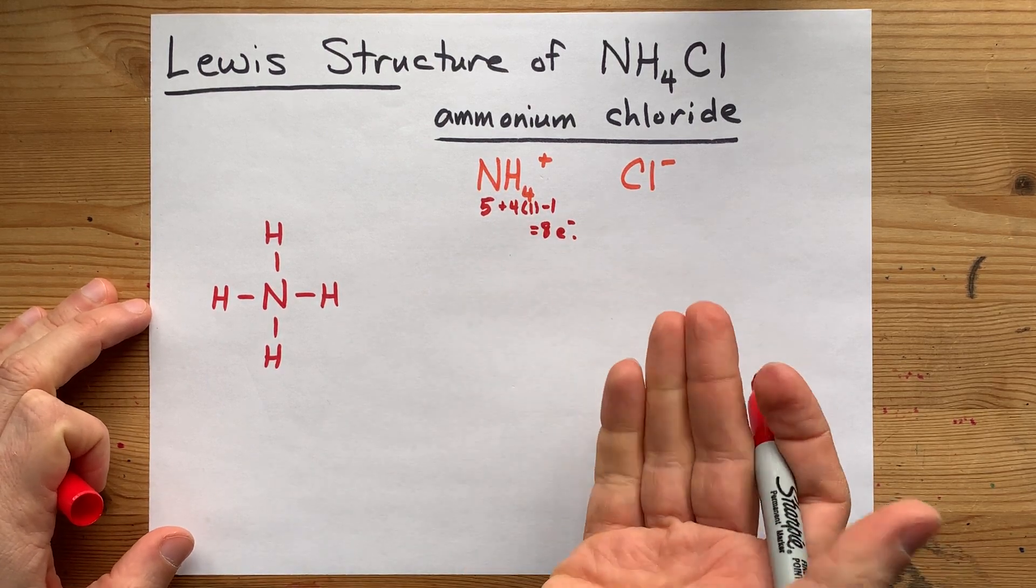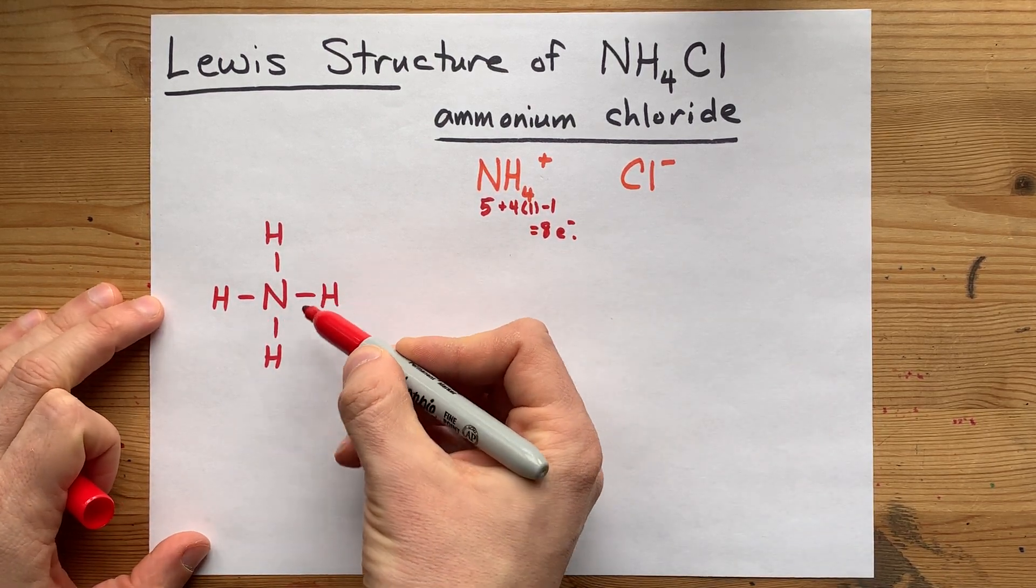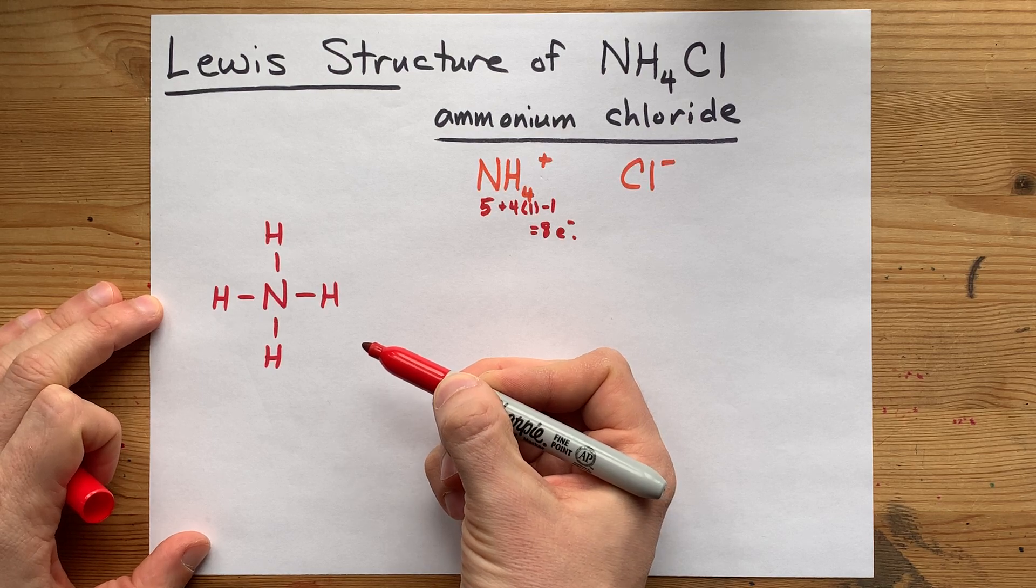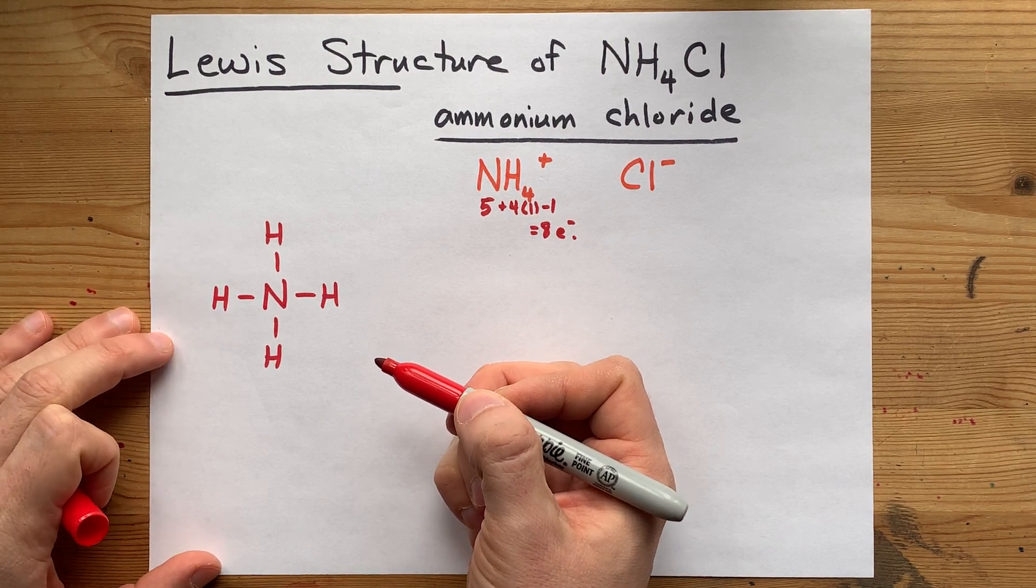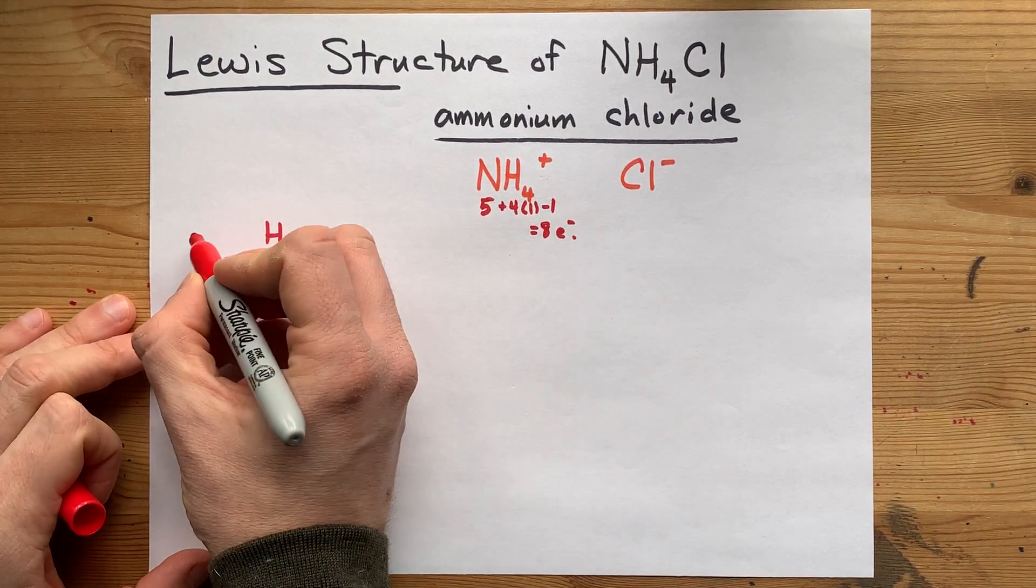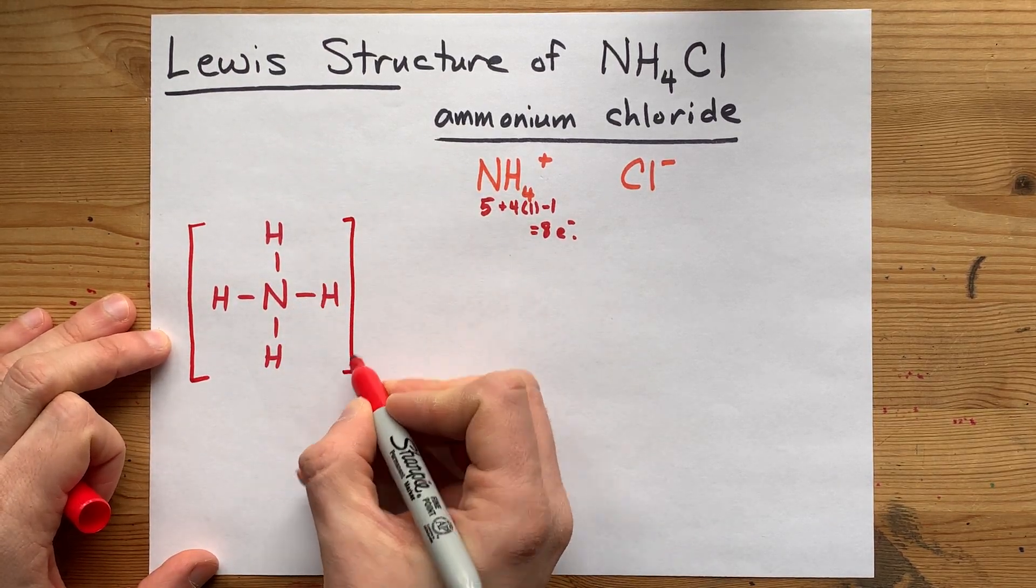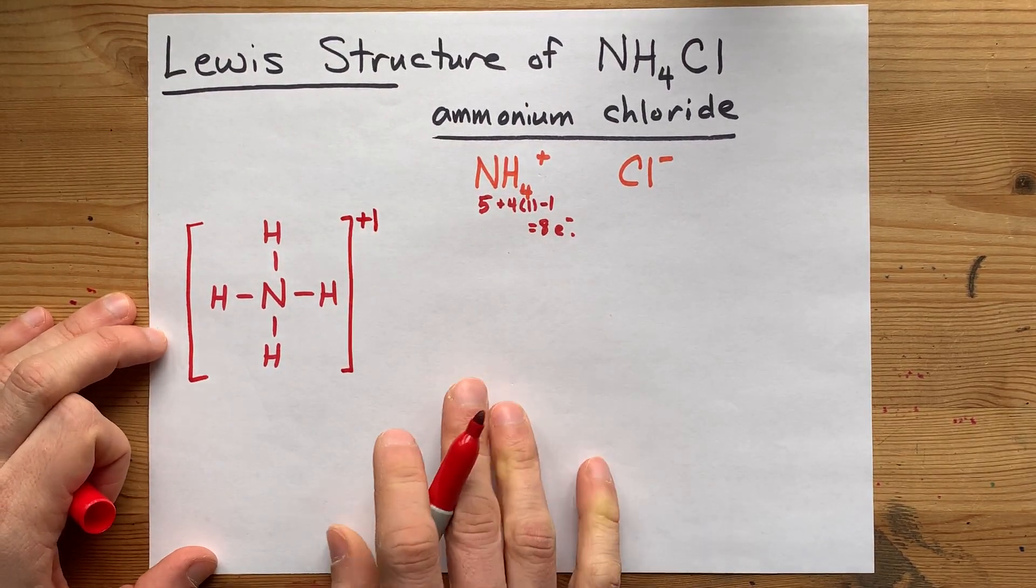You need eight electrons just to make four single bonds between nitrogen and each of the hydrogens. So this is the completed Lewis structure. You just have to put it in square brackets with a plus one charge.